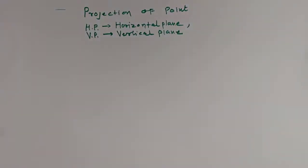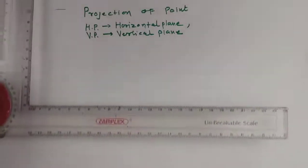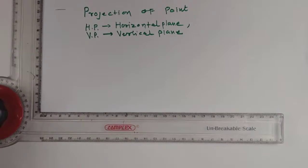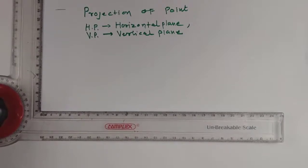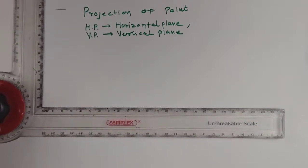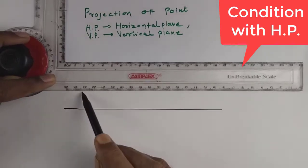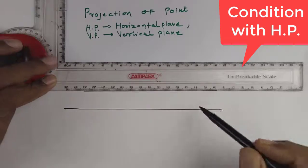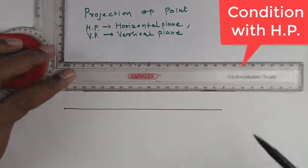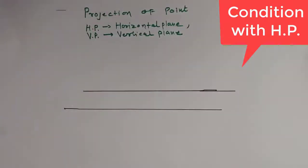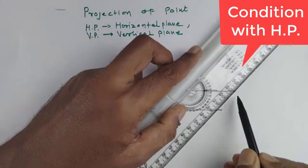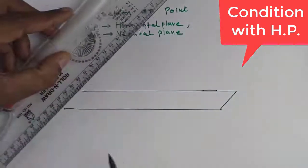So today we are going to study the conditions with HP and VP in our first class. As per the surface of the plane which is parallel to the ground, it is called as an HP plane. This is our HP plane.